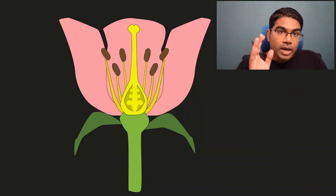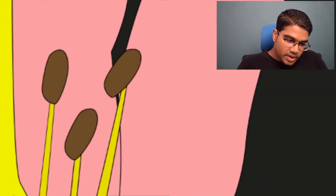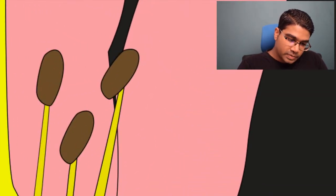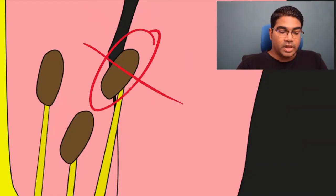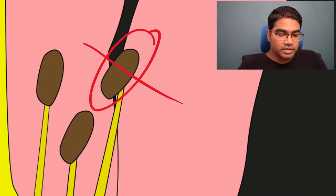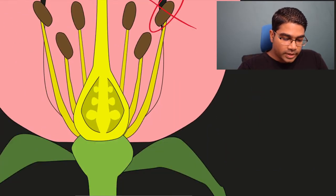If you want to know more about the structure of a flower and all the different parts, I have already prepared another video on that — I will leave the link in the description below. Now let us look at the development of the pollen grain. The pollen grains are located in this part here, which is known as the anther. When we cut the anther and look at the cross section, this is what it will look like.